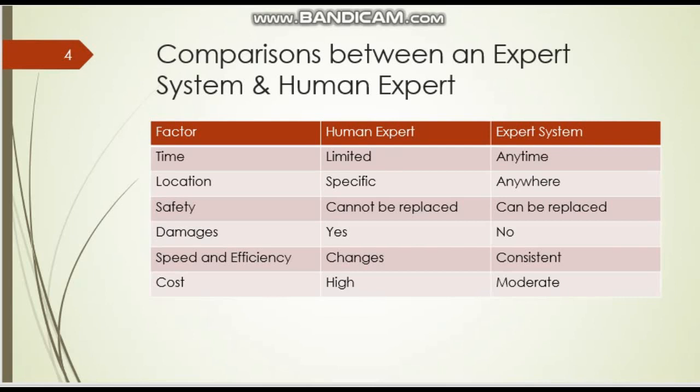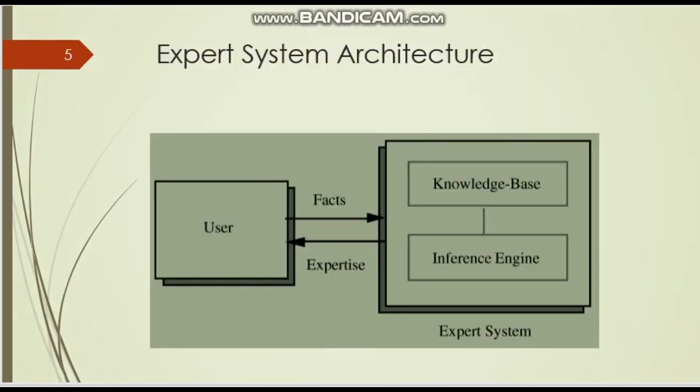The speed and efficiency may change for the human expert, but it is consistent for the expert system as it is a computer program. Cost is high for the human expert but moderate for the expert system. This is the architecture of the expert system, where the knowledge database and inference engines are present, which apply rules.